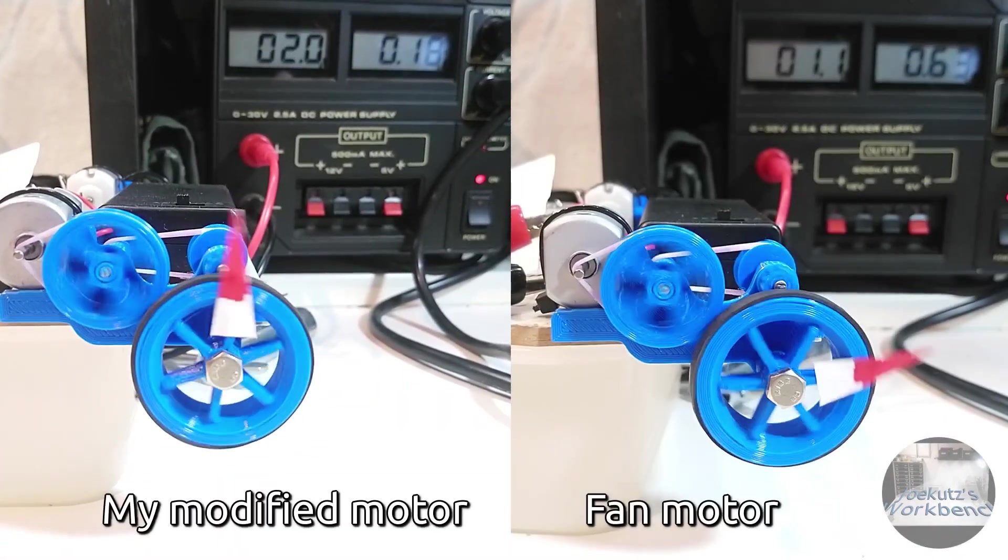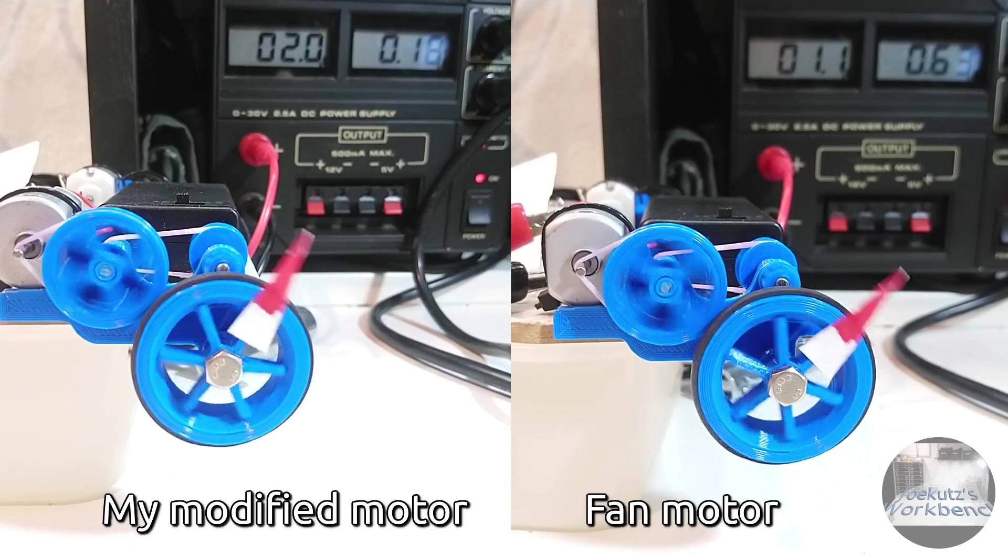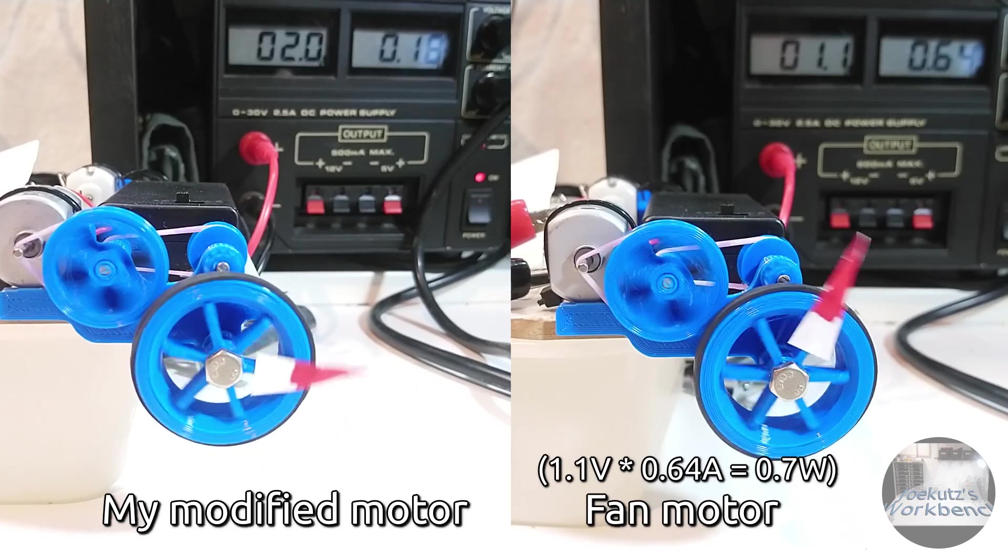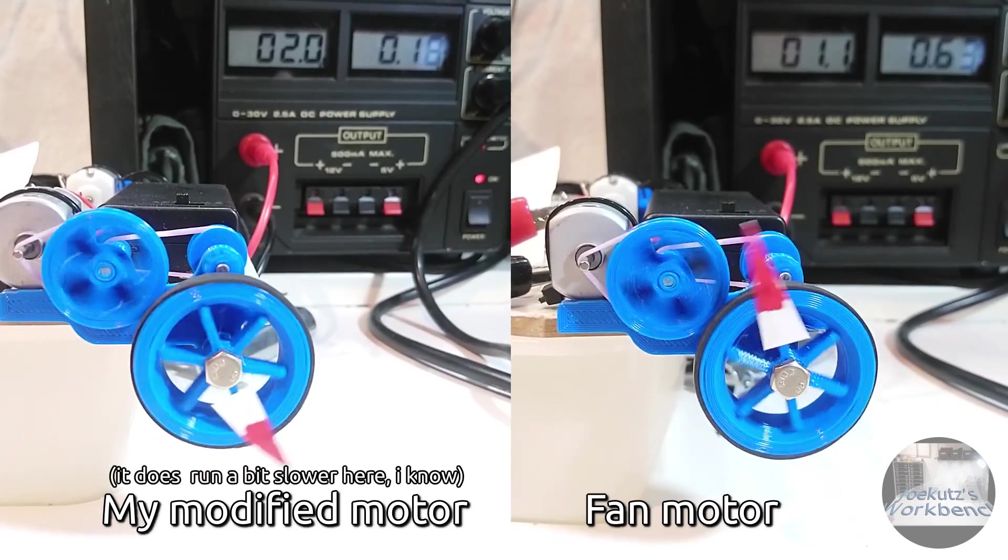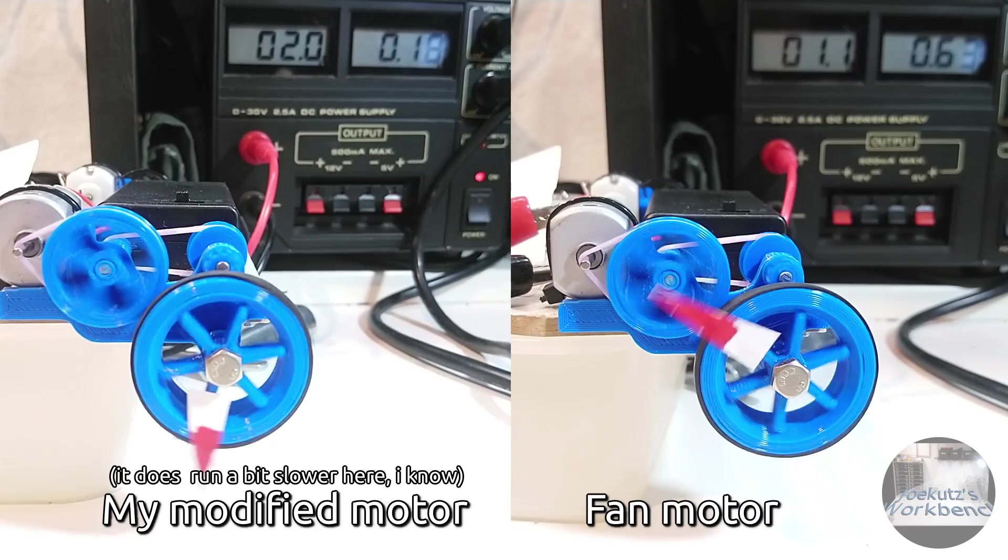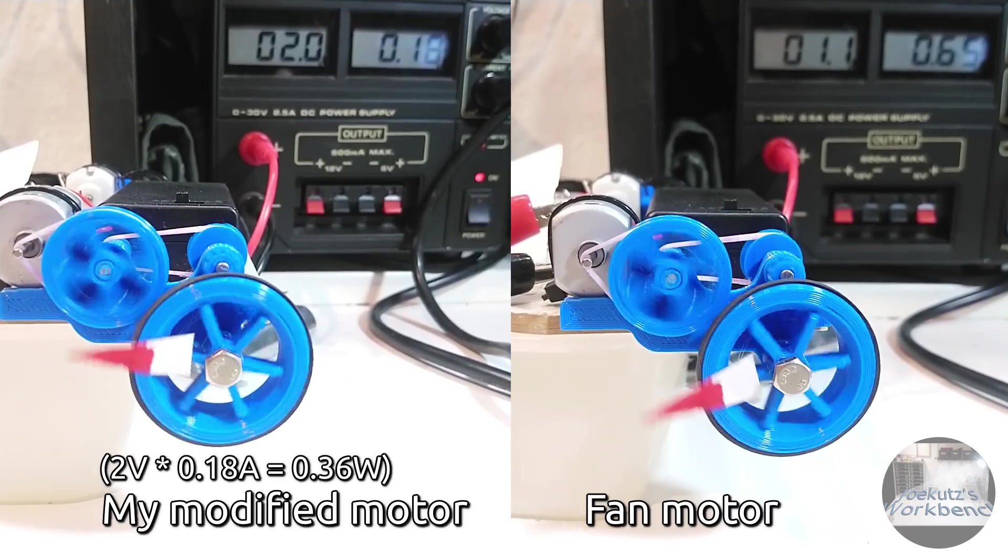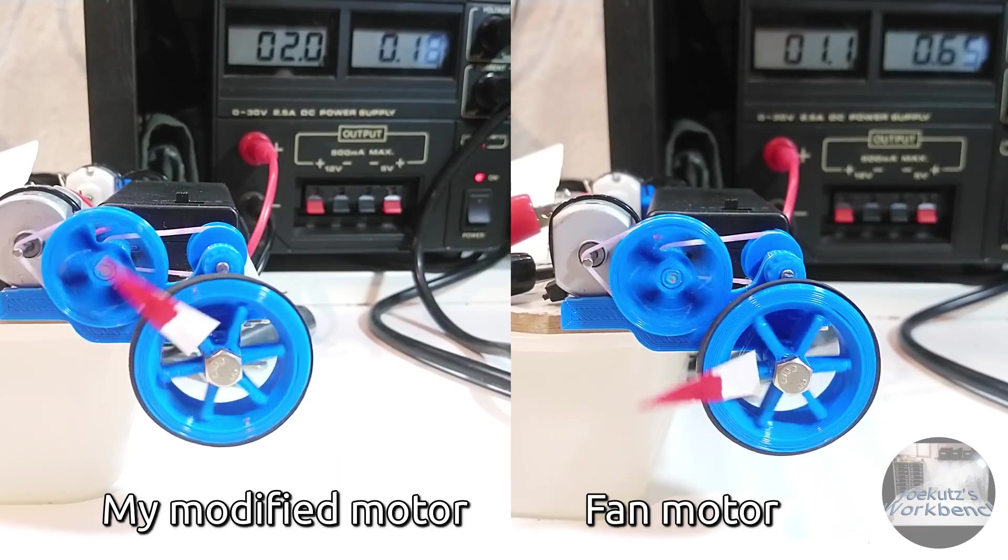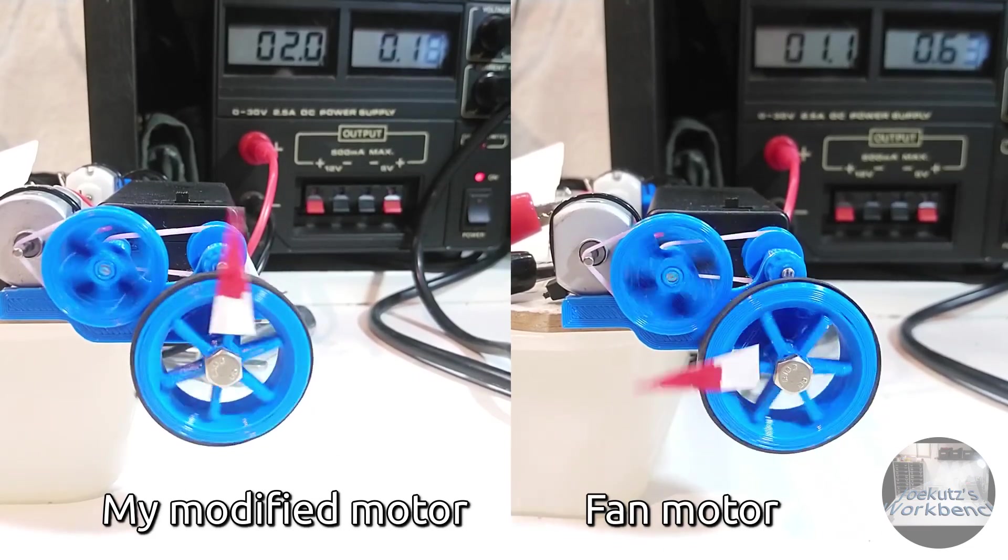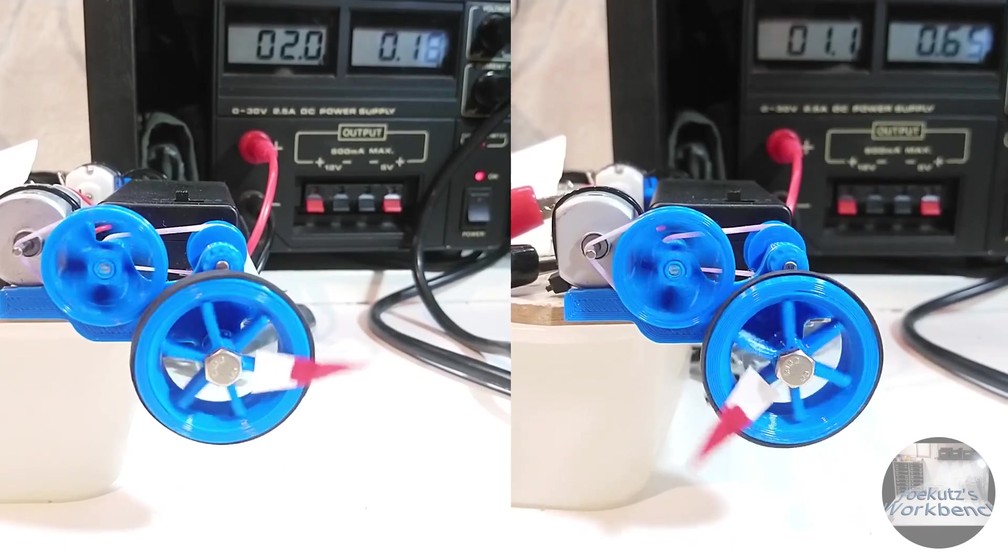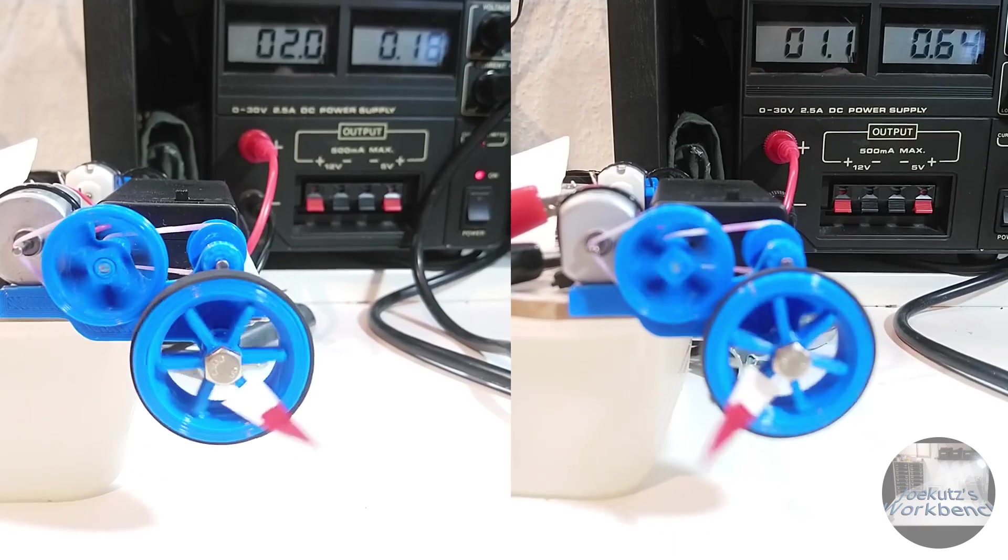When driving one of my wheels it took only 180 milliamps at 2 volts. The unmodified motor took 650 milliamps at 1.1 volts or 0.7 watts. The modified motor needs more voltage to get to the same speed, but it has only 0.36 watts of power consumption, which is about half of what the other motor has. That was exactly what I needed for my vehicles. And after winding more motors I could finally finish the design.